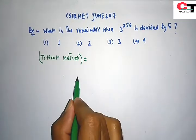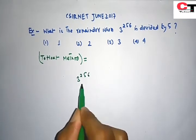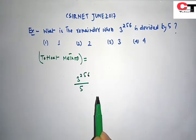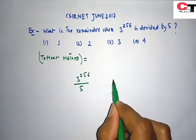What is the problem given here? 3 to the power of 256 is divided by 5. We are supposed to find out the remainder.